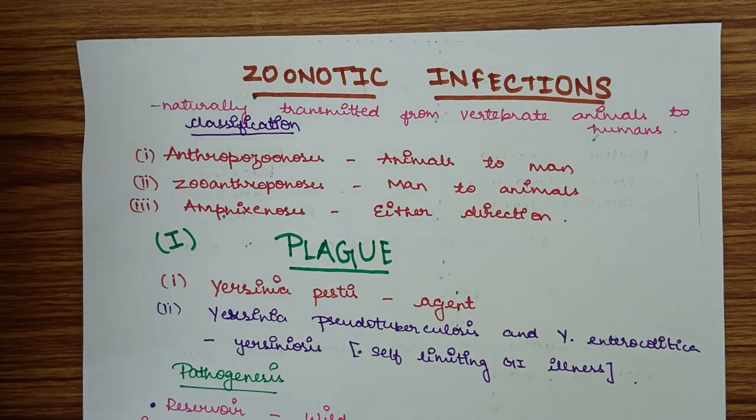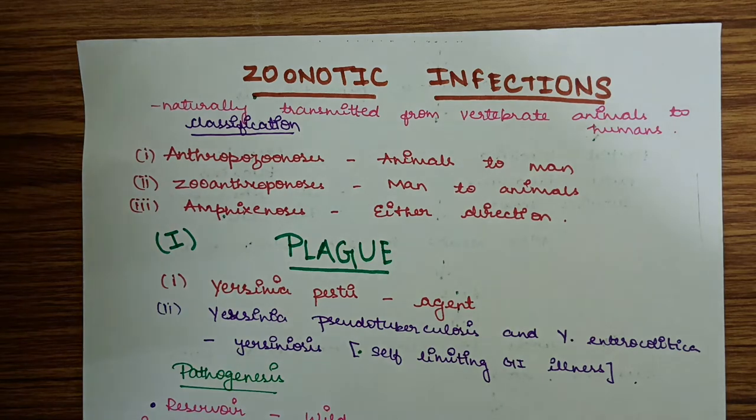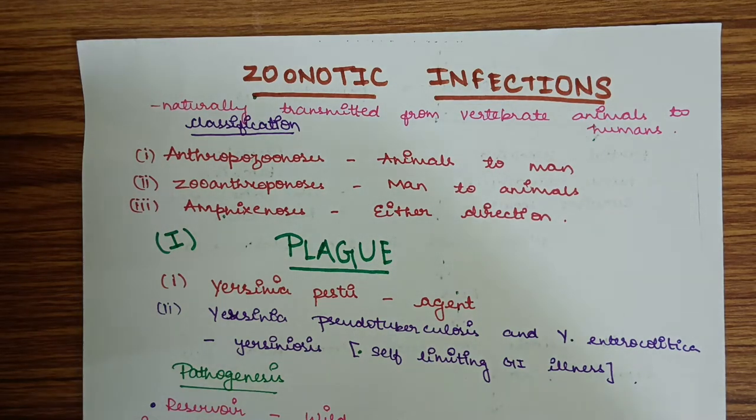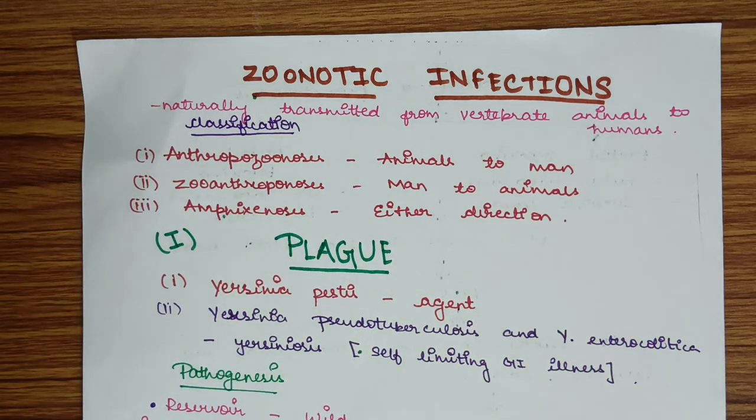Today we will discuss zoonotic infections. It is one of the chapters of miscellaneous topics in Apoorva Shastri. First we will see what are zoonotic infections.